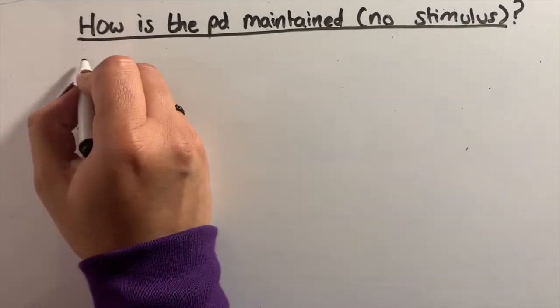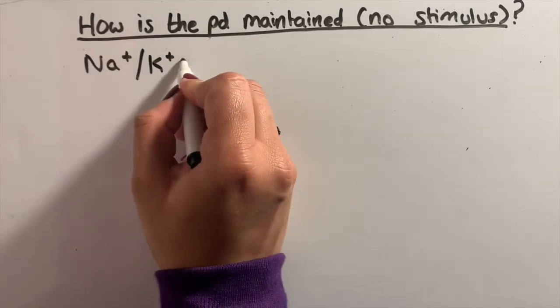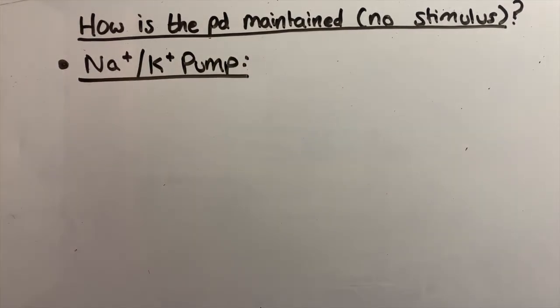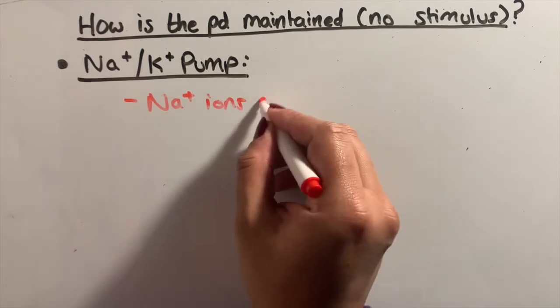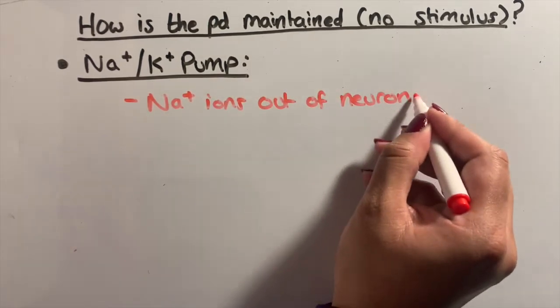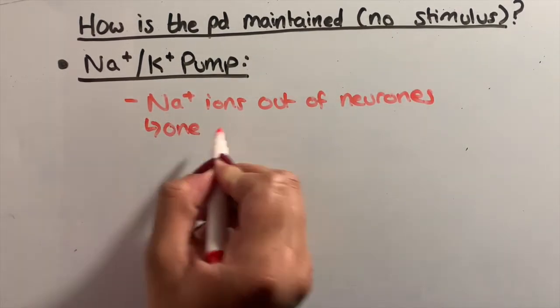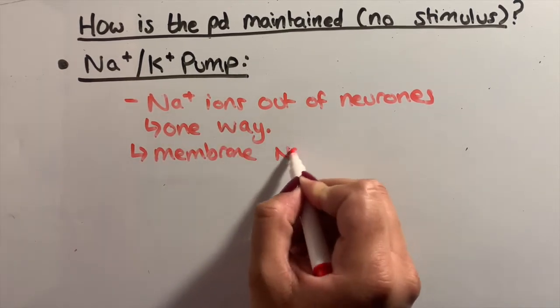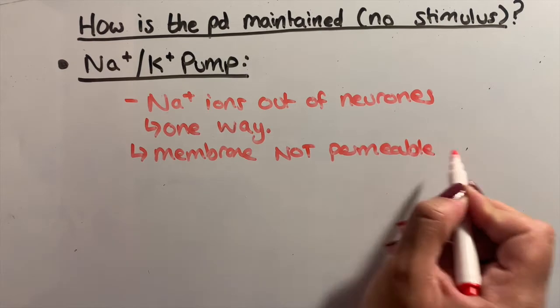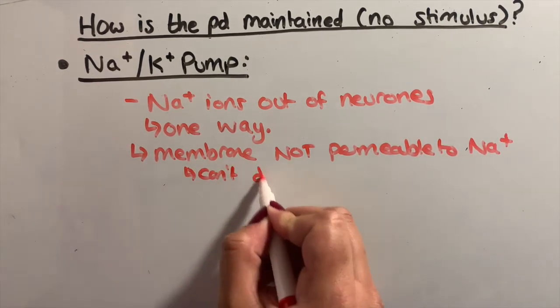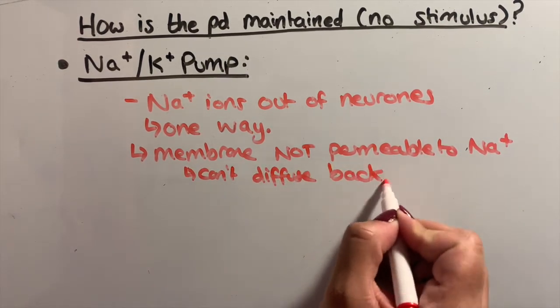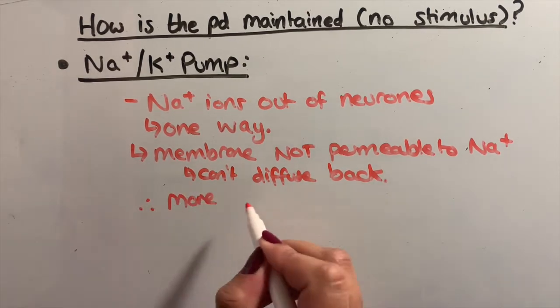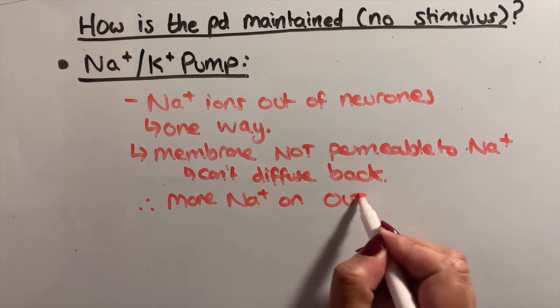So now let's look at how this minus 70 millivolts is maintained by the sodium-potassium pump. The sodium-potassium pump moves sodium ions out of the neuron, but the membrane isn't permeable to sodium ions, so they can't diffuse back in. This creates a sodium ion electrochemical gradient, a concentration gradient of ions, because there are more positive sodium ions on the outside compared to the inside of the cell.